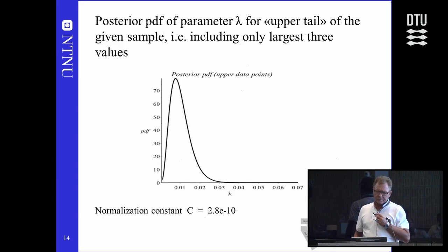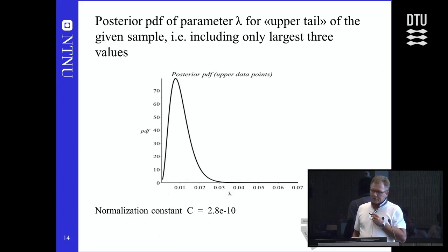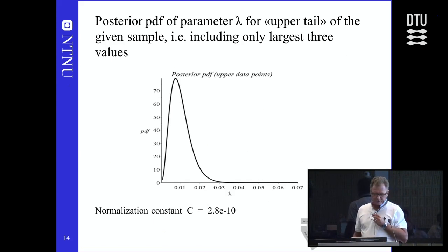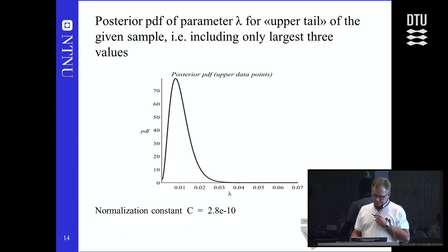If only the upper three data points are used, a different posterior is obtained. The maximum likelihood lambda estimator is now smaller, closer to 0.01, and the normalization constant is very different — 2.8 times 10 to the minus 10 for this case.